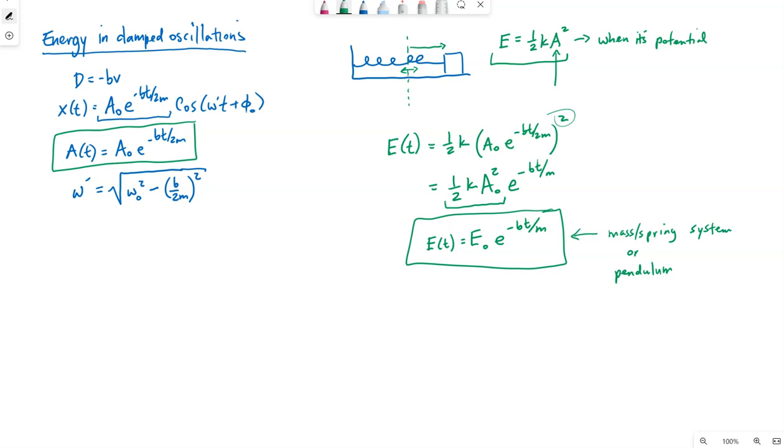Now, our author calls this quantity of m over b, the time constant. We use the symbol tau, that's what this is. It's the same symbol we used for torque last semester. We can write our energy equation in terms of tau, if we would like. This time constant, it's giving us the amount of time it takes for the energy to decrease to some certain value.